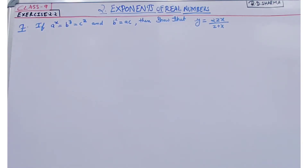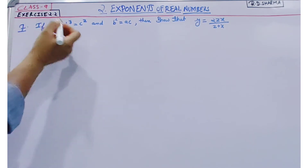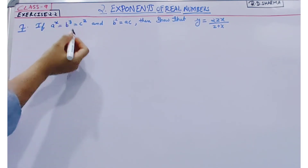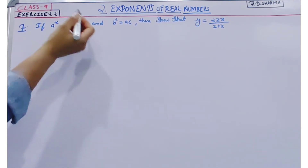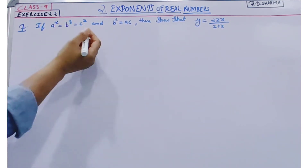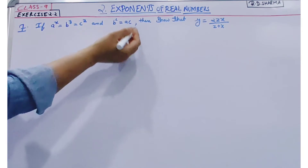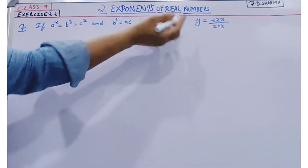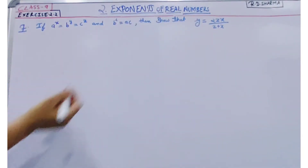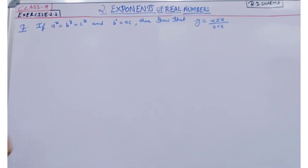Hello everyone, today we will discuss exercise 2.2 of class 9 from Adi Sharma, question number 7. According to this question, if a to the power x is equal to b to the power y is equal to c to the power z, and b square is equal to ac, then show that y is equal to 2zx divided by z plus x. So let's start.